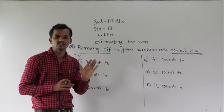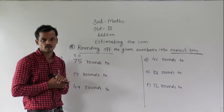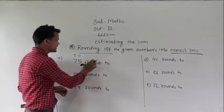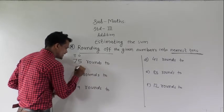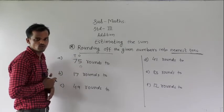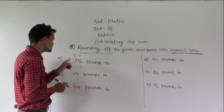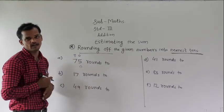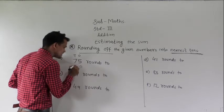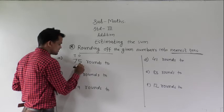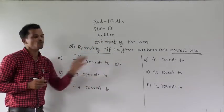Since the ones place digit is 5 or greater than 5, this number will be rounded up. The tens place digit is 7, and 7 plus 1 equals 8. So this number will be rounded up to 80. This 75 rounds to 80.